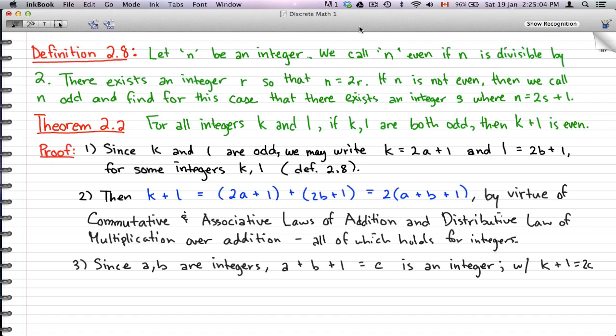So the first definition I have for you is let n be an integer. We call n even if n is divisible by 2, and there exists an integer r so that n equals 2r. So pretty much anything times by 2 will give you an even number, even integer.